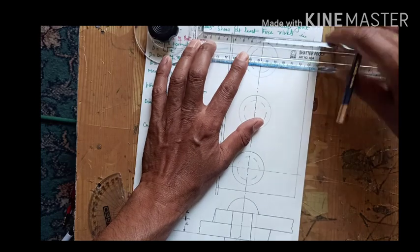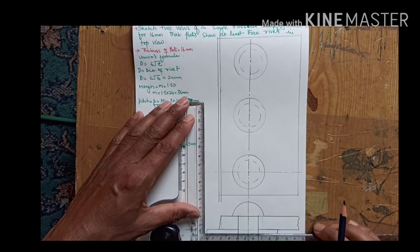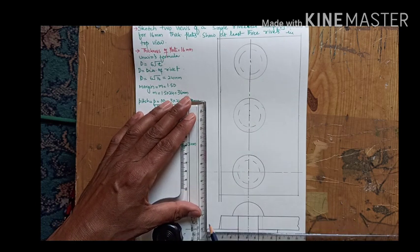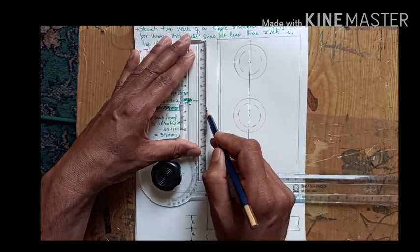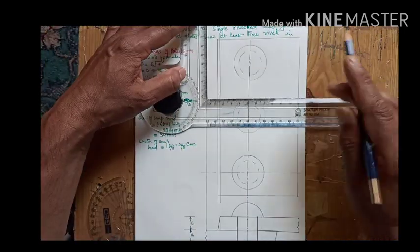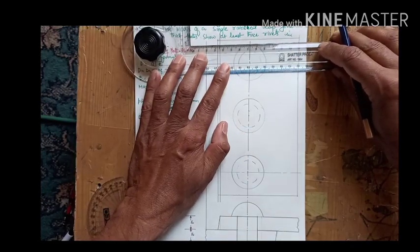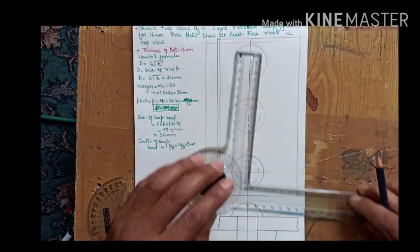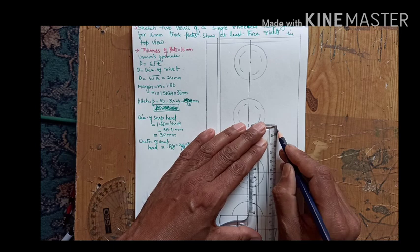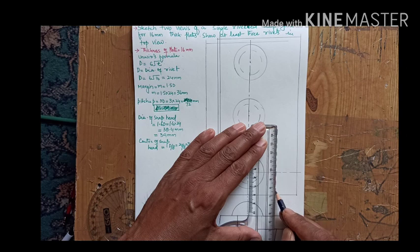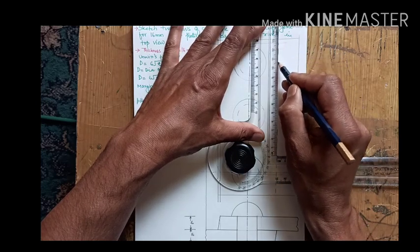By drawing this line, one plate is completed in the top view. Now same will be repeated for the bottom most plate. We need to produce this line up with the solid line. This line needs to be drawn dotted. Now these are the two lines which need to be completely drawn as dotted because they are under the top plate, which means these lines cannot be seen. That's the reason we draw them as dotted lines.